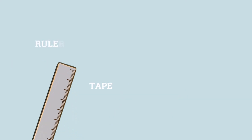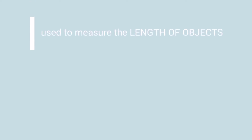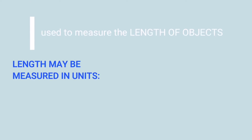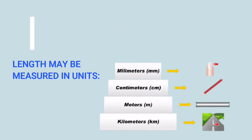Ruler, tape measure, and meter stick — these tools are used to measure the length of objects. Length may be measured in units: millimeters, centimeters, meters, and kilometers.